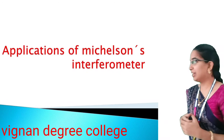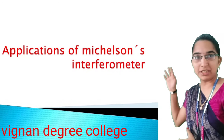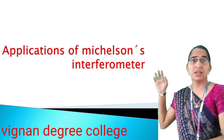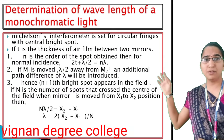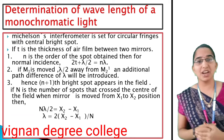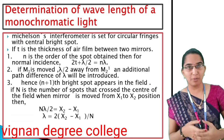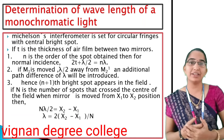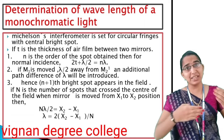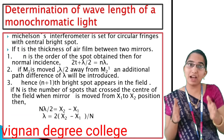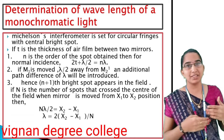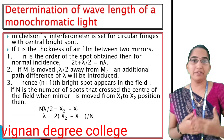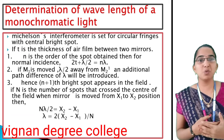Next topic is Applications of Interferometer. The first application is Determination of Wavelength of Monochromatic Light. The Michelson Interferometer is set to circular fringes with a Central Bright Spot.